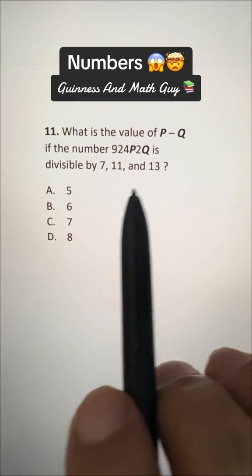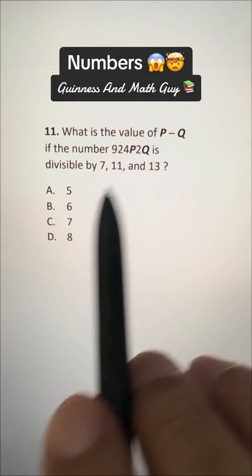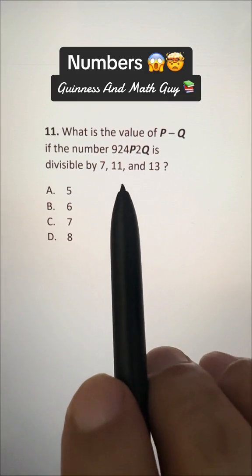What is the value of P minus Q if the number 924P2Q is divisible by 7, 11, and 13?